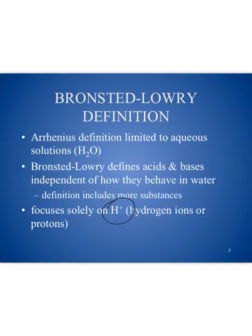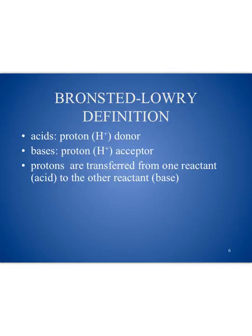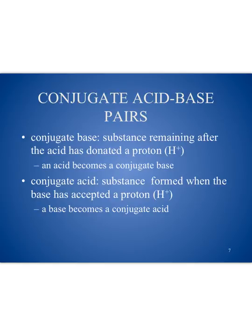You can also call hydrogen ions protons because they are missing the electron. In the Bronsted-Lowry definition, acids are the proton donor and bases are the proton acceptor. Within the chemical equations we're going to look at, we'll have one reactant being the donor and one being the acceptor. The conjugate base is the product of the acid after it has donated the proton, and the conjugate acid is the product after the base has accepted the proton. Acids become conjugate bases, and bases become conjugate acids. So within the equations, we're going to see two conjugate acid-base pairs.